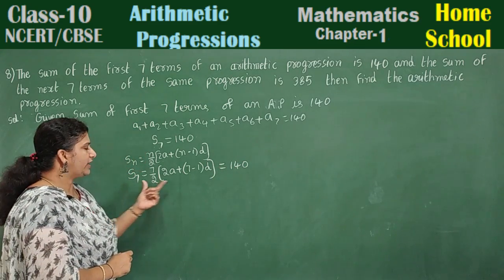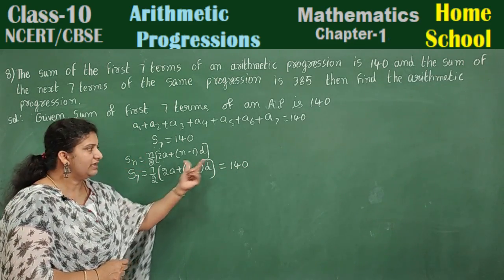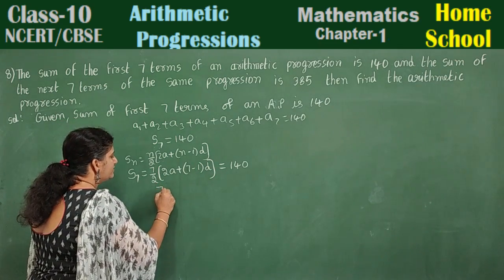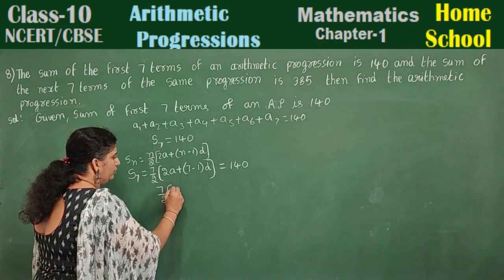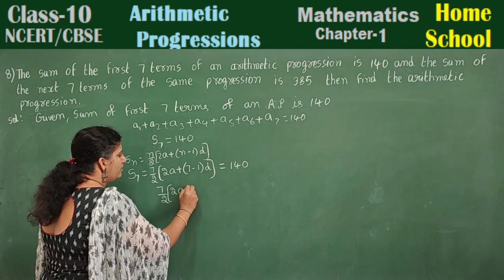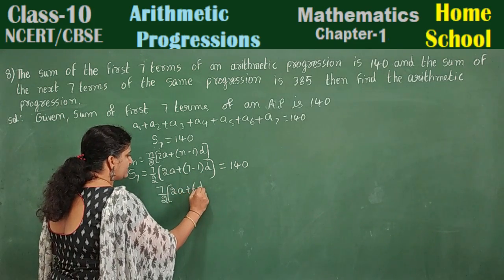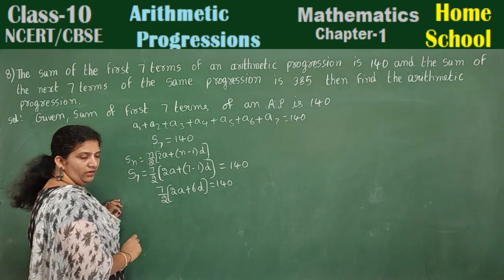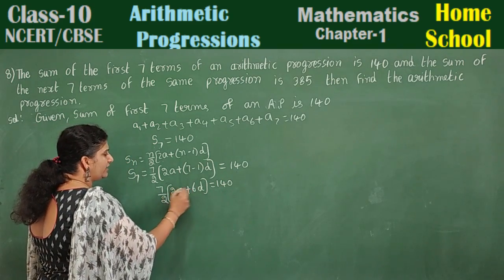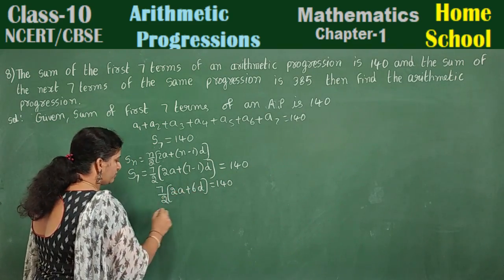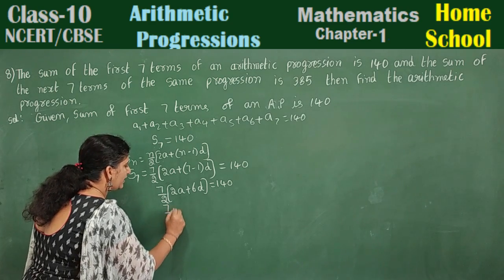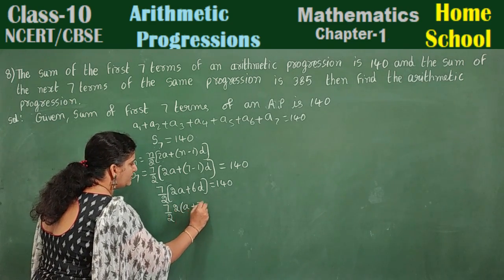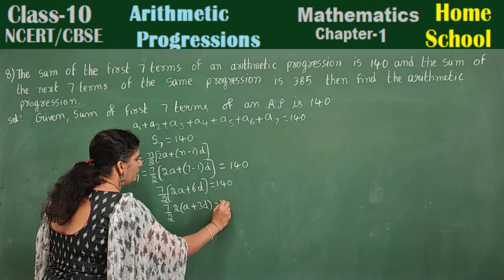S7 is equal to 140. So 7 by 2 into 2a plus 6d is equal to 140. Now take out what is common — 2 is common. So 7 by 2 into 2 times a plus 3d is equal to 140. The 2 will cancel.